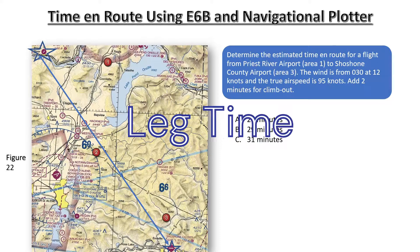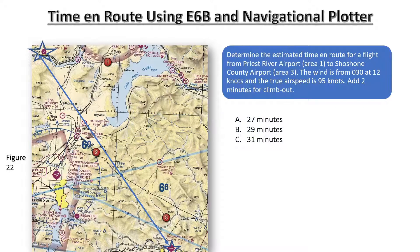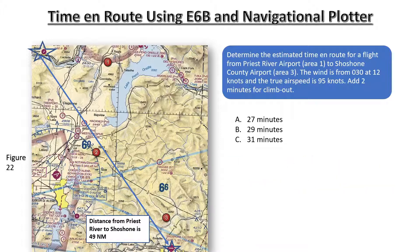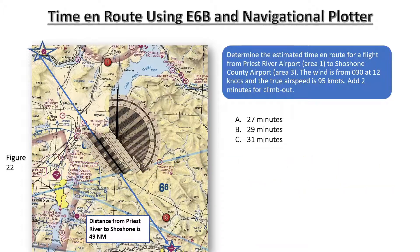Using the navigational plotter, we can see that the distance from Priest River Airport to Shoshone County Airport is 49 nautical miles. To find the true course, lay the navigational plotter over the flight path drawn on the chart. Next, align the center of the navigational plotter on the main meridian line intersecting the flight path. The meridian line is lined up between the 140 and 150 degree markers on the plotter, so the true course on this flight is 144 degrees.